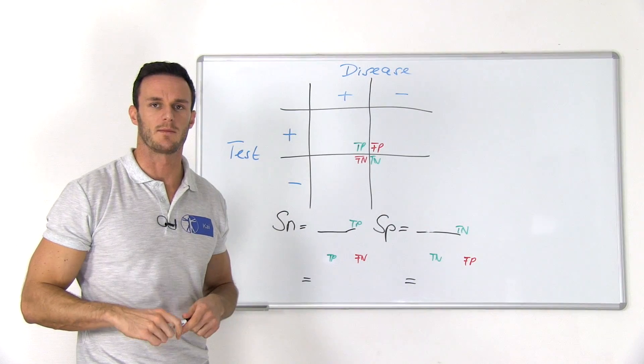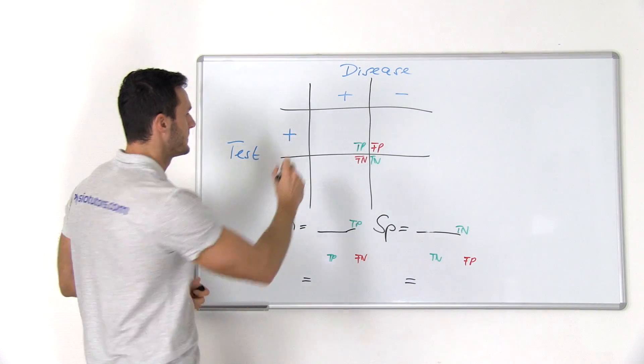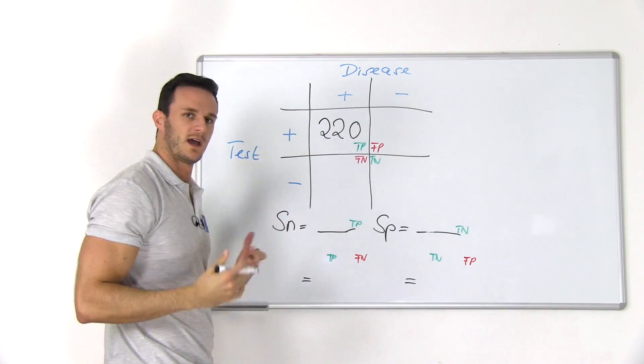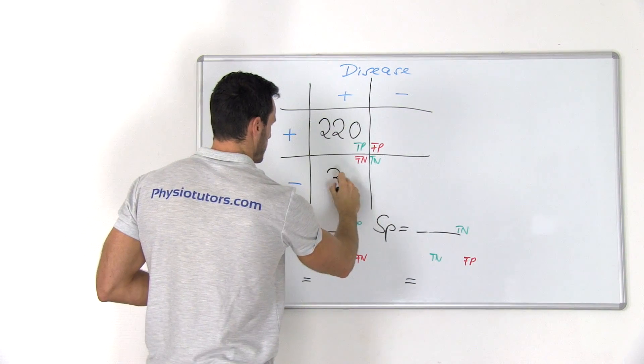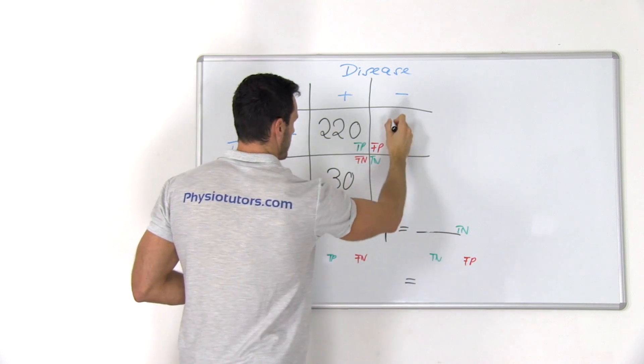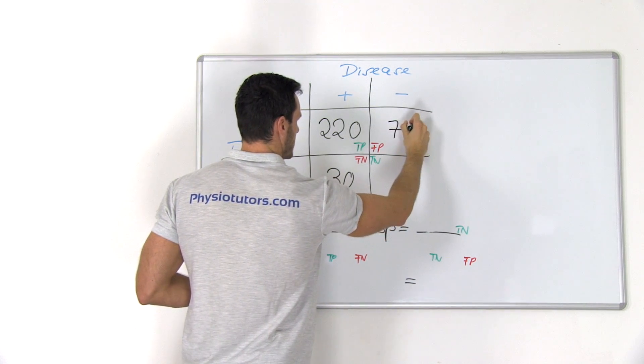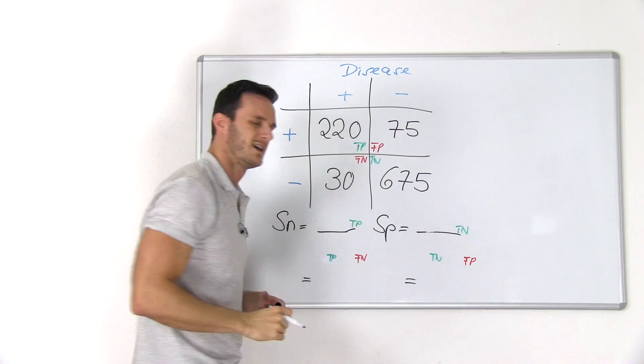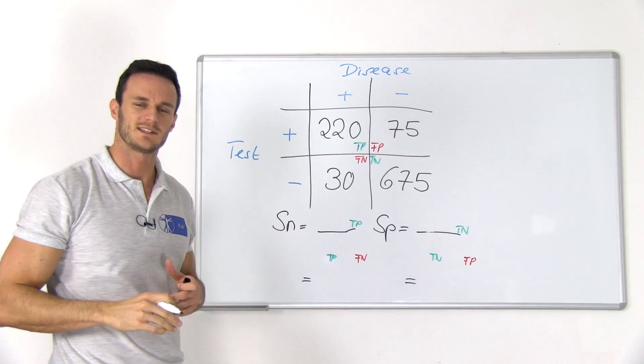Let's look at an example. So if we have 220 true positives, then we have 30 false negatives. Then we have 75 false positives and 675 true negatives. Now if we want to calculate sensitivity,